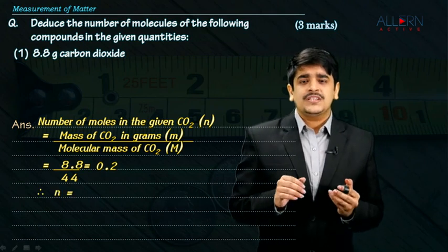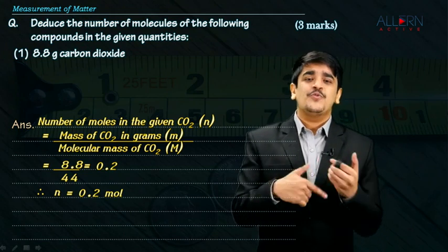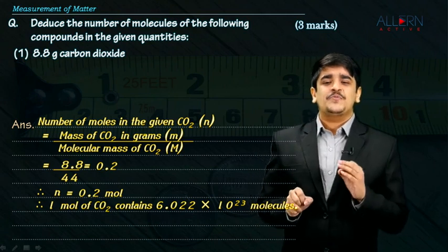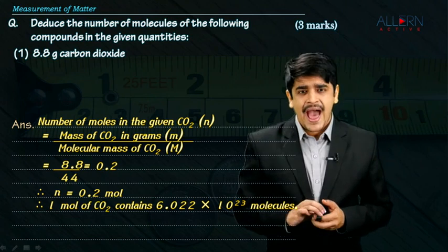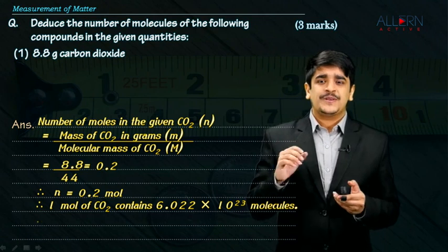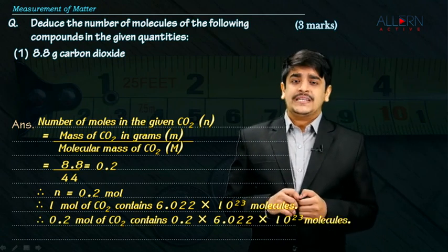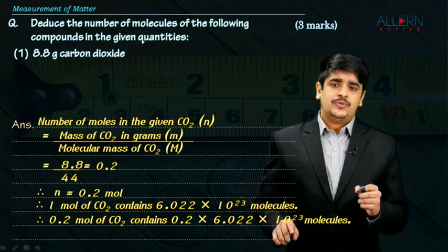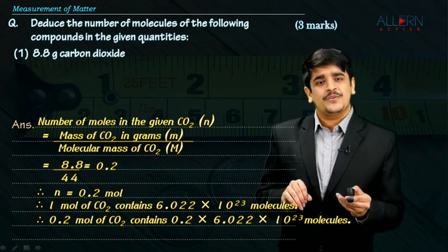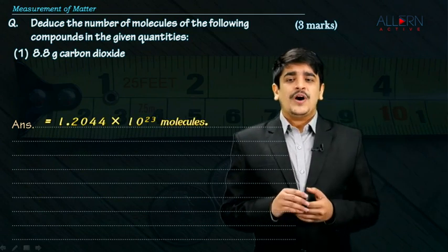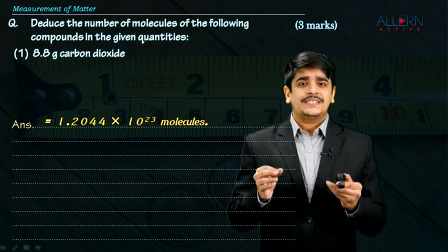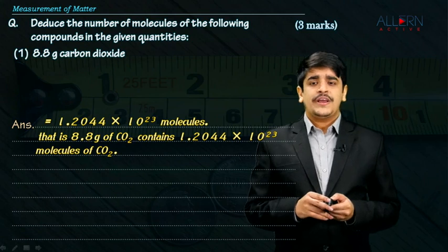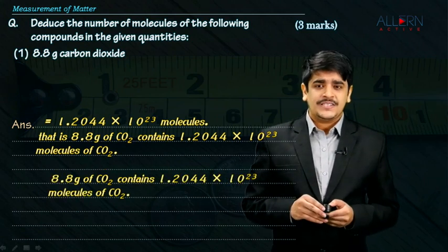Now that the number of moles has been calculated, I can convert it to the number of molecules. I know that 1 mole of any substance contains 6.022 × 10²³ molecules. I don't have 1 mole — I have 0.2 moles of carbon dioxide. So 0.2 moles contains 0.2 × 6.022 × 10²³. Multiplying 0.2 × 6.022 gives 1.2044. Therefore, 8.8 grams of carbon dioxide contains 1.2044 × 10²³ molecules of carbon dioxide. That's the final answer.